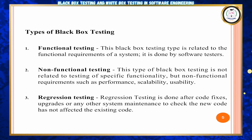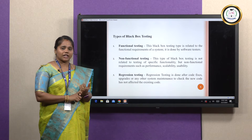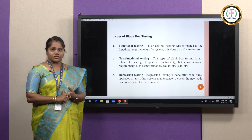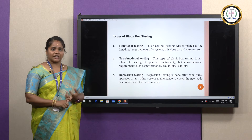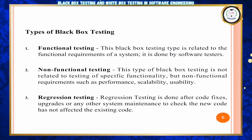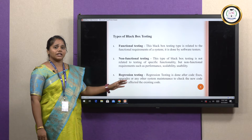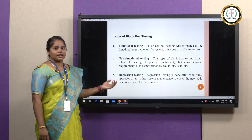Next, types of black box testing. There are three types: functional testing, non-functional testing, and regression testing. Functional testing is based on the requirements and specification of the software system. Non-functional testing covers performance, usability, and scalability. Regression testing is performed after the software is updated — any code updates or system maintenance are covered under regression testing.